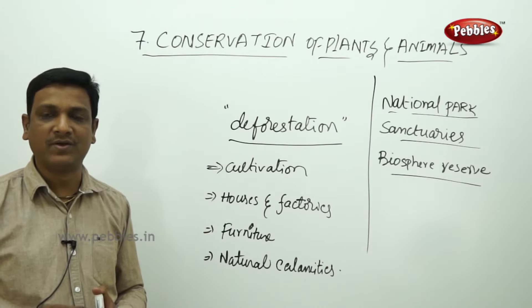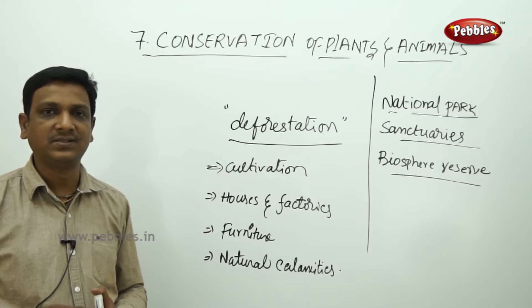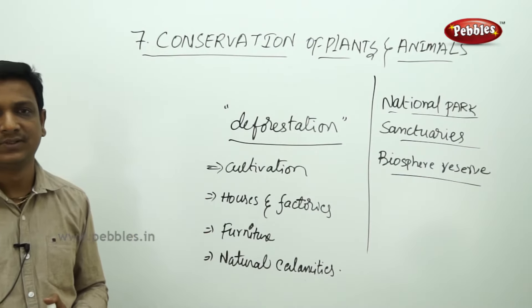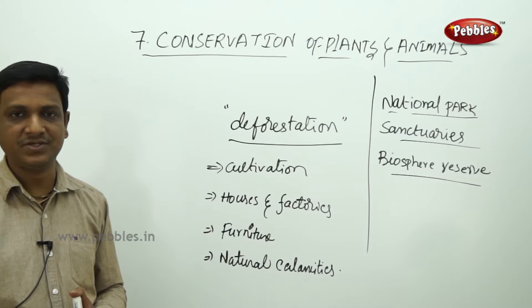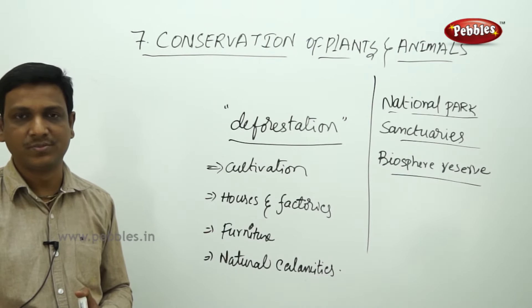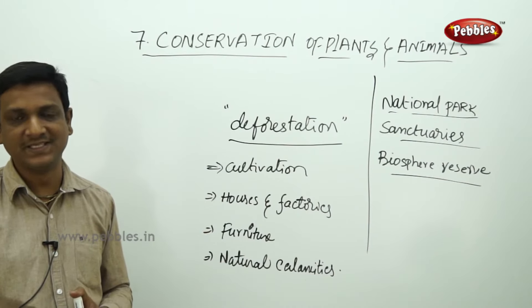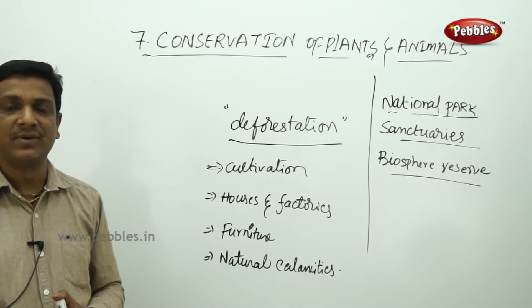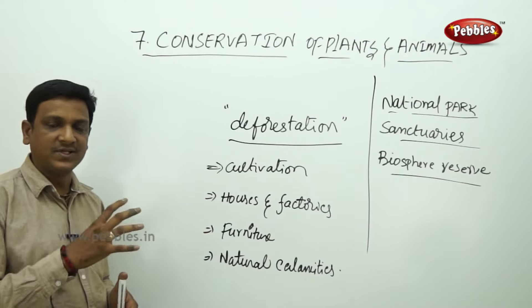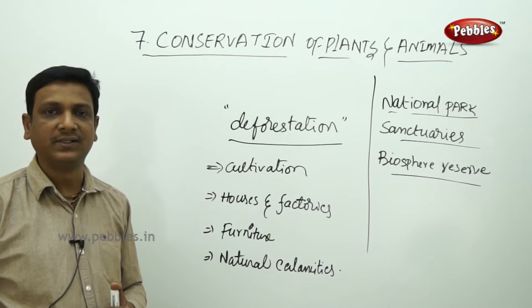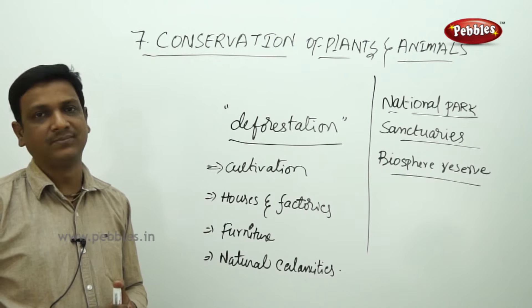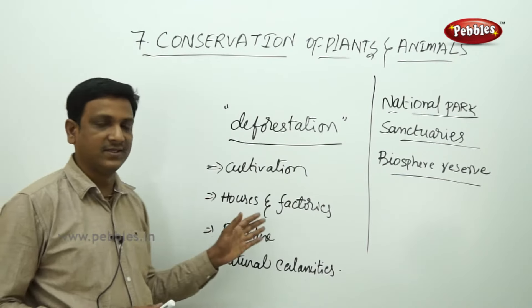Take the example of the Polavaram project. If it is built, many tribals and a large forest area will be submerged under water. The tribals oppose it, not wanting to lose the forest. But farmers are demanding an irrigation project for better crop production. We cannot easily justify this as it has two sides — social development versus disturbance to the natural setup.